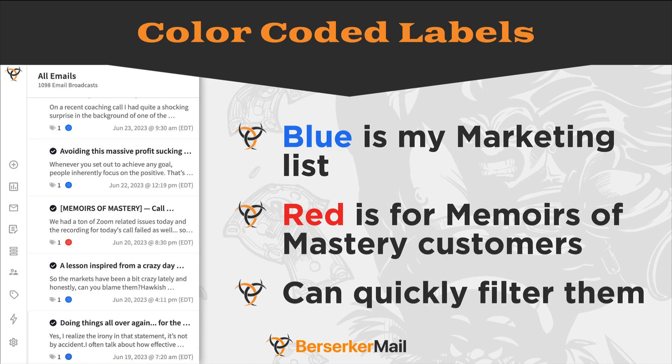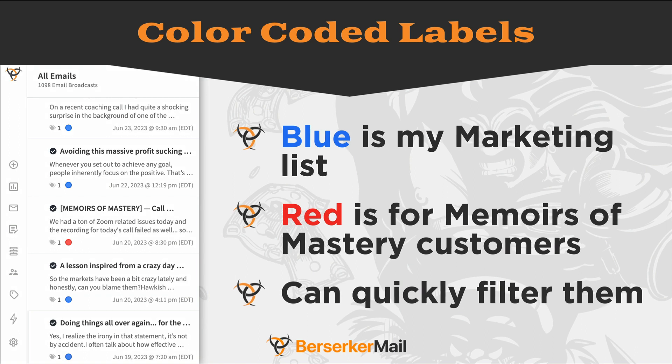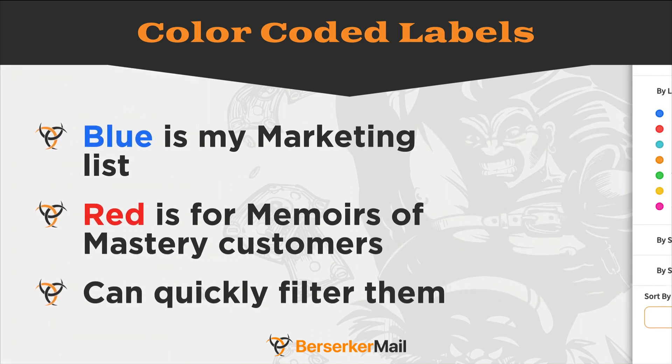As we go further beyond just saved searches and tags, we can also use colored labels. You can see those colored labels — the blue and the red — in the screenshot on the left from the All Emails section of Berserker Mail. These colored labels can be associated with the saved search so that you can very easily and visually distinguish emails between your marketing and your customer emails, for example. And you can also quickly and easily filter them.